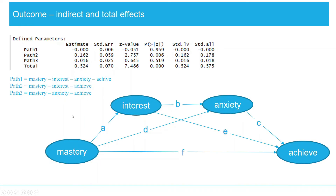If we look at the indirect and total effects: Path 1 is the indirect effect of mastery on achievement through interest and anxiety — that is not significant, as the p-value is greater than 0.05. In Path 2, mastery has an indirect effect on achievement through interest — that is significant, with a significance value less than 0.05. In Path 3, mastery has an indirect effect on achievement through anxiety — that is not significant. Finally, mastery has a total effect of 0.524 on achievement, and that is also significant.